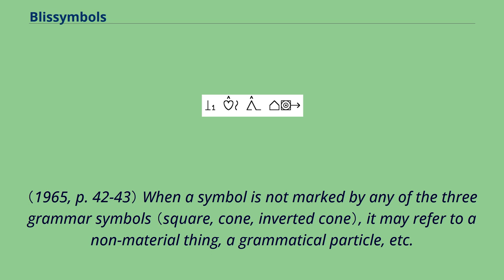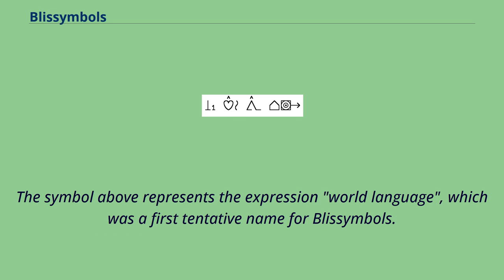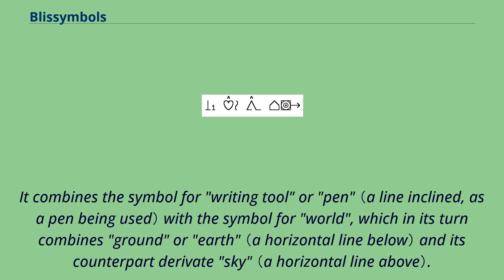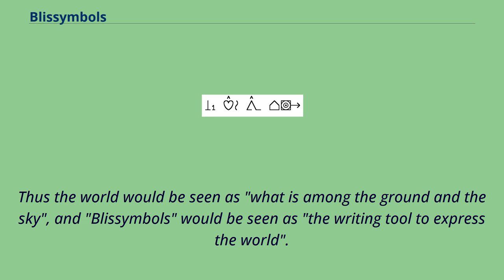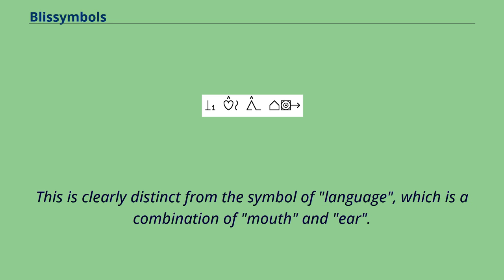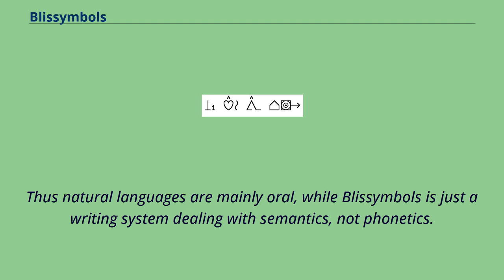The symbol for world language, which was a first tentative name for Bliss Symbols, combines the symbol for writing tool or pen with the symbol for world, which in its turn combines ground or earth and its counterpart derivate sky. Thus the world would be seen as what is among the ground and the sky, and Bliss Symbols would be seen as the writing tool to express the world. This is clearly distinct from the symbol of language, which is a combination of mouth and ear. Thus natural languages are mainly oral, while Bliss Symbols is just a writing system dealing with semantics, not phonetics.